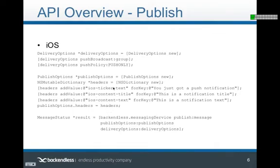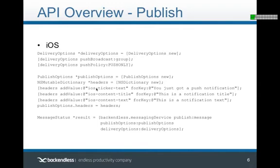Publish options are important because with various operating systems you can define how the push notification will manifest itself on the device. If you're targeting iOS, you can specify it as an alert, a badge, or a sound notification. To support those, we introduced various headers you can specify when sending a message — it boils down to just one call where you publish your message, specify publish options, and specify delivery options. The rest happens automatically.